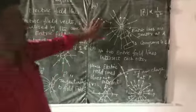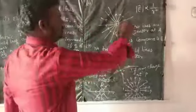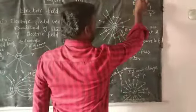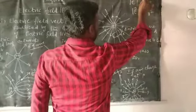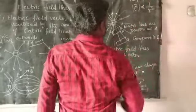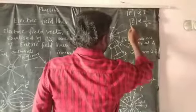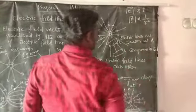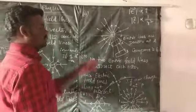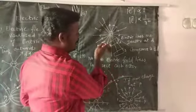Next, the electric field vector is directly proportional to the product of the magnitude of the two charges. The magnitude of the electric field is directly proportional to the product of the charges and inversely proportional to the square of the distance between them. So, the electric field strength decreases with increasing distance.